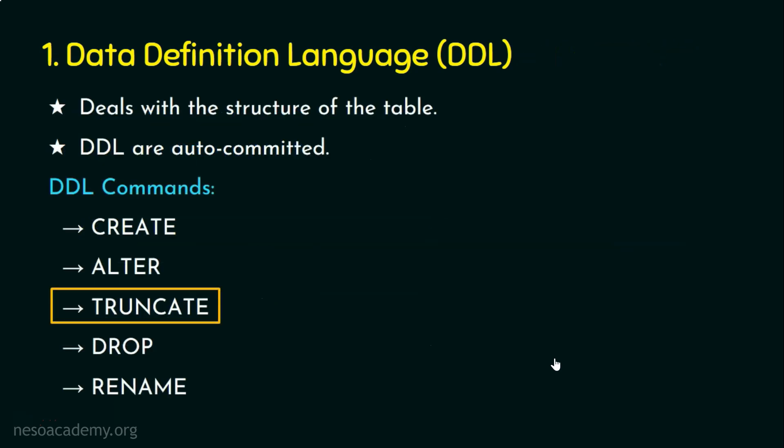TRUNCATE deletes all rows from the table, and the same task can also be accomplished using the DELETE command, which is a DML command. So what is the difference between the TRUNCATE DDL command and the DELETE DML command? Generally, TRUNCATE is considered to be faster than DELETE. We will elaborate on this difference when we cover the DELETE DML command.